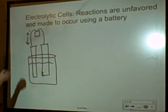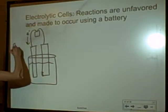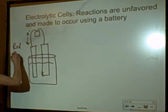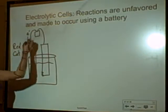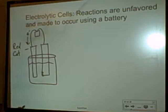So, reduction always happens at the cathode, so it's still red cat. Reduction happens at the cathode. But this time, you're forcing electrons to go in a direction that they're not favored to go.